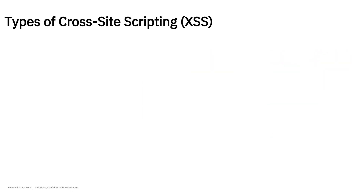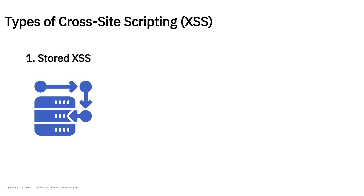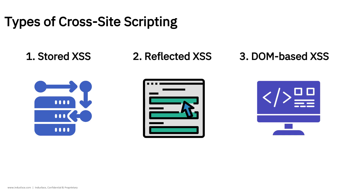There are three main types of XSS attacks. Stored XSS: the attacker plants the script on a website and it runs every time someone visits. Reflected XSS: the script is hidden in a link or form and only runs when clicked. DOM-based XSS: the malicious script is executed in the browser by modifying the web page's DOM, without involving the server.